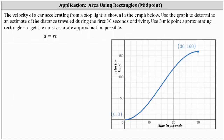The velocity of a car accelerating from a stoplight is shown in the graph below. Use the graph to determine an estimate of the distance traveled during the first 30 seconds of driving. Use three midpoint approximating rectangles to get the most accurate approximation possible.